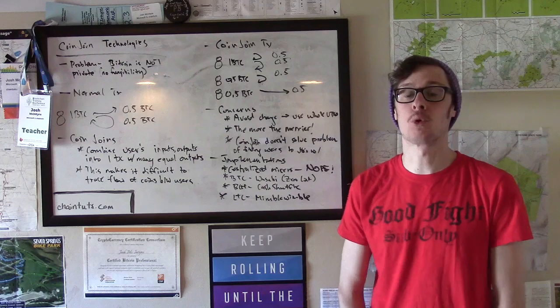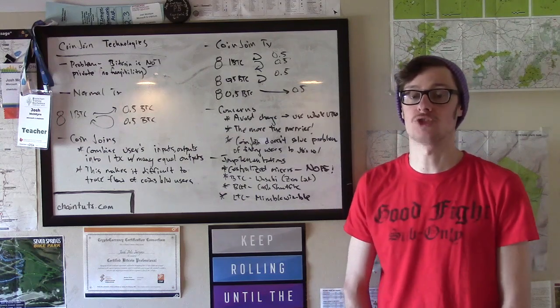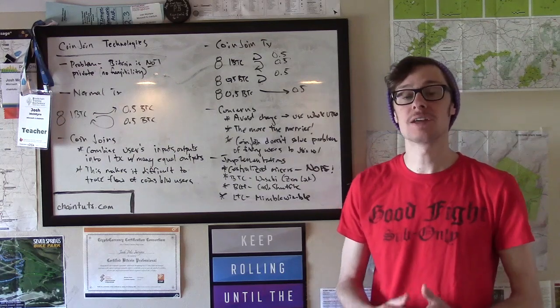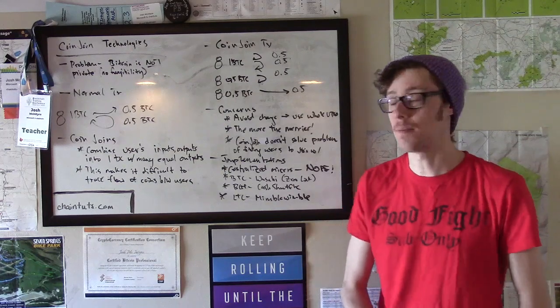Since privacy is an important part of money, one way this can be solved on UTXO blockchains is using various implementations of a CoinJoin algorithm. So let's discuss what that means.